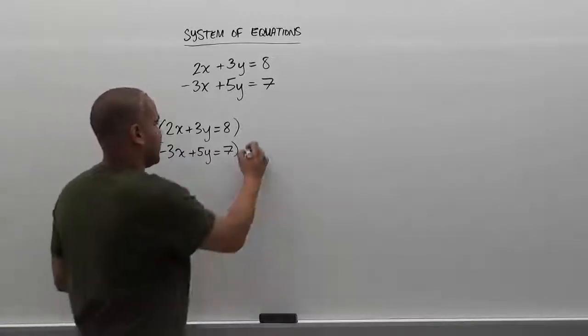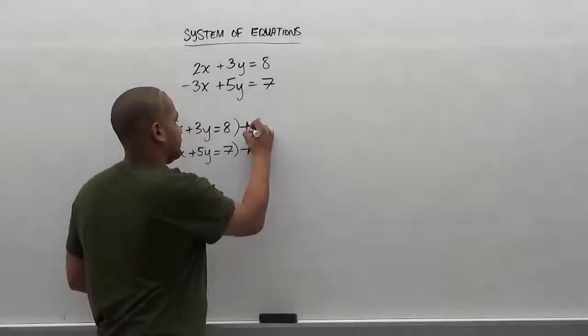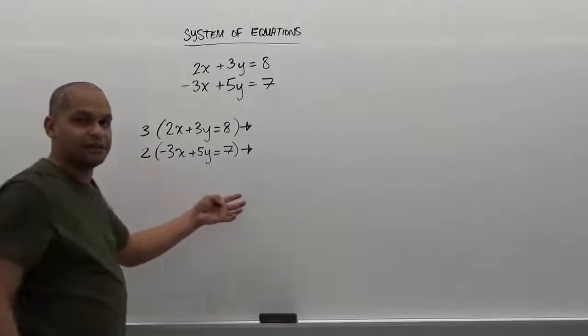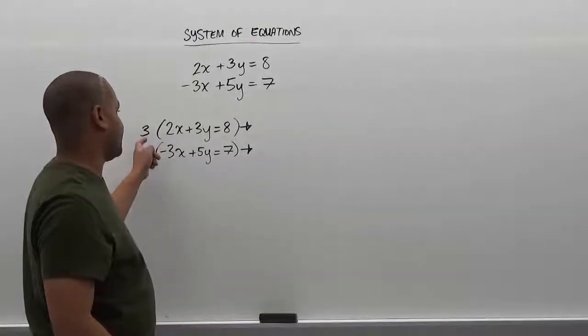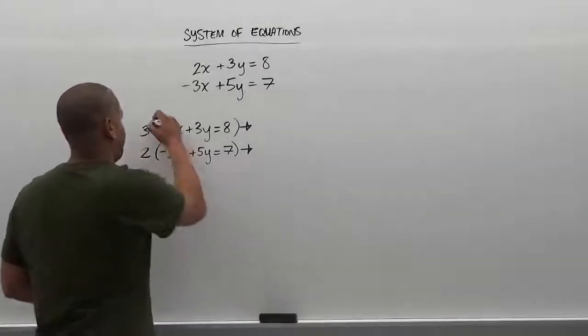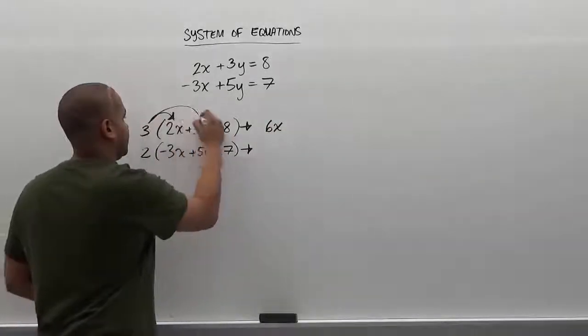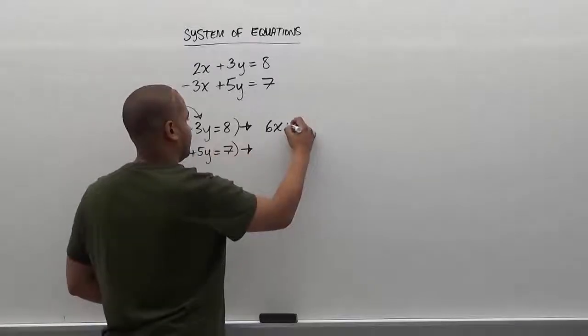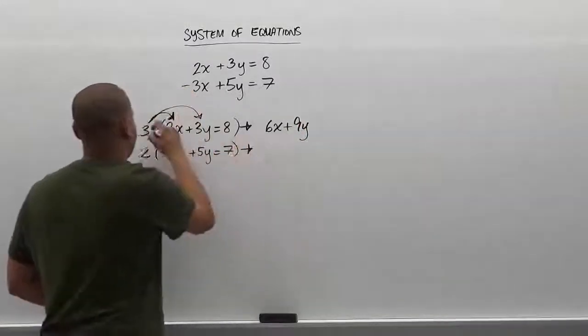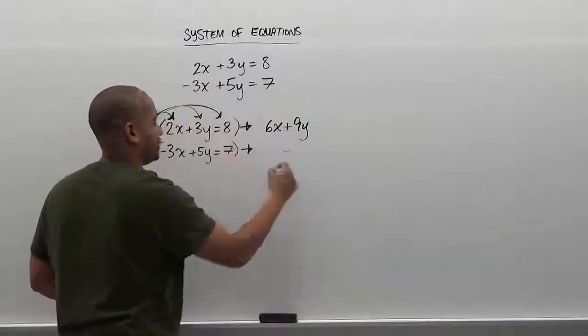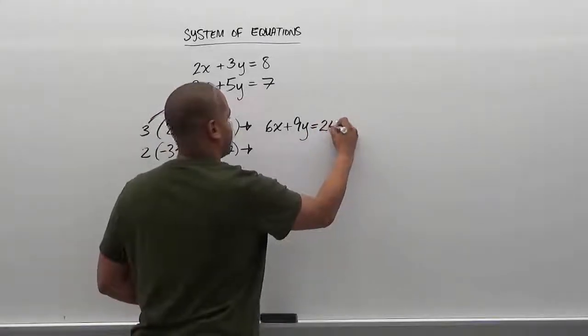Once we multiply these two equations, we can add them up and cancel out the two variables that are common. So here we're going to have 3 times 2x which gives us 6x. Then we have 3 times positive 3y which gives us 9y, and finally 3 times positive 8 which gives us positive 24.